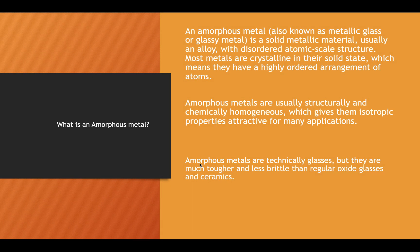What is an Amorphous Metal? An Amorphous Metal, also known as Metallic Glass or Glass Metal, is a solid metallic material, usually an alloy, with disordered atomic scale structure. Most metals are crystalline in the solid state, which means that they have a highly ordered arrangement of atoms.